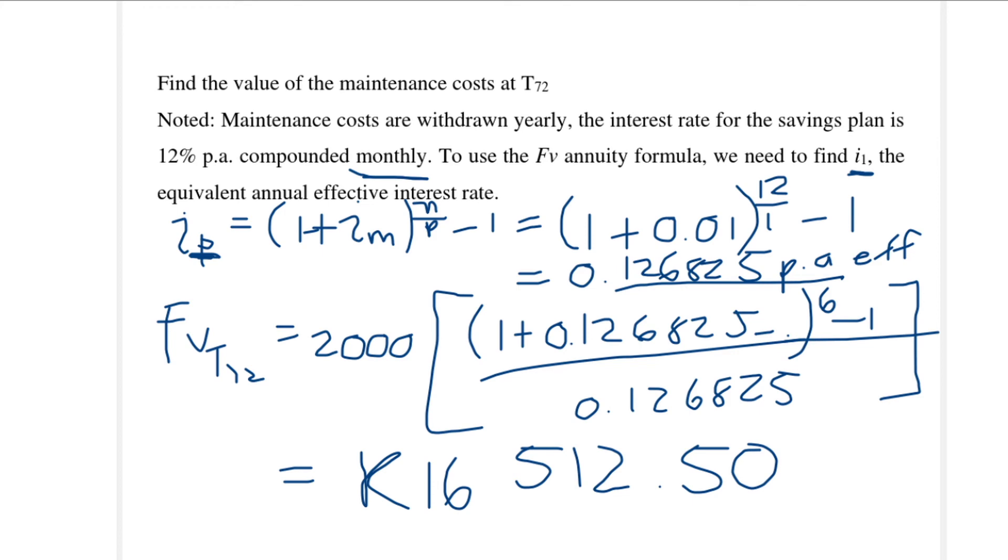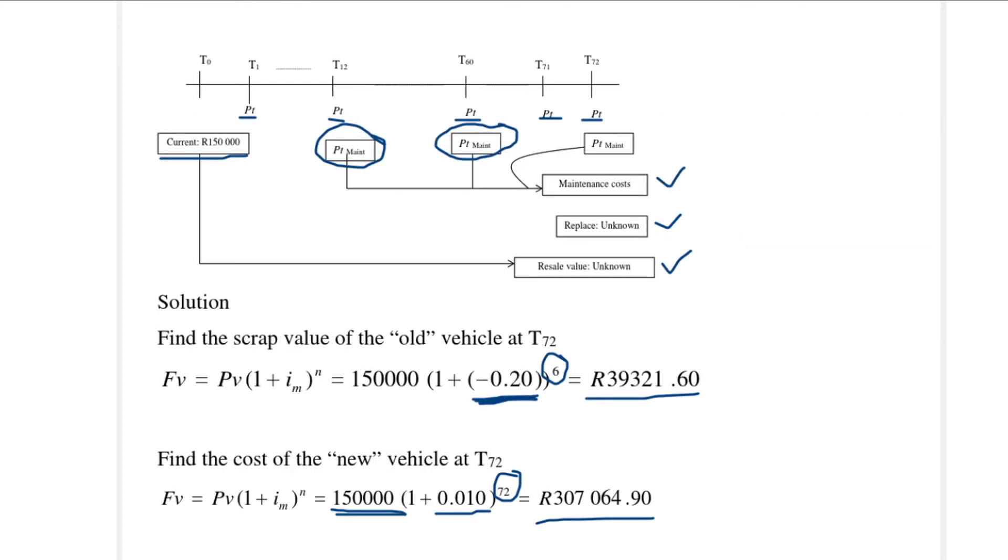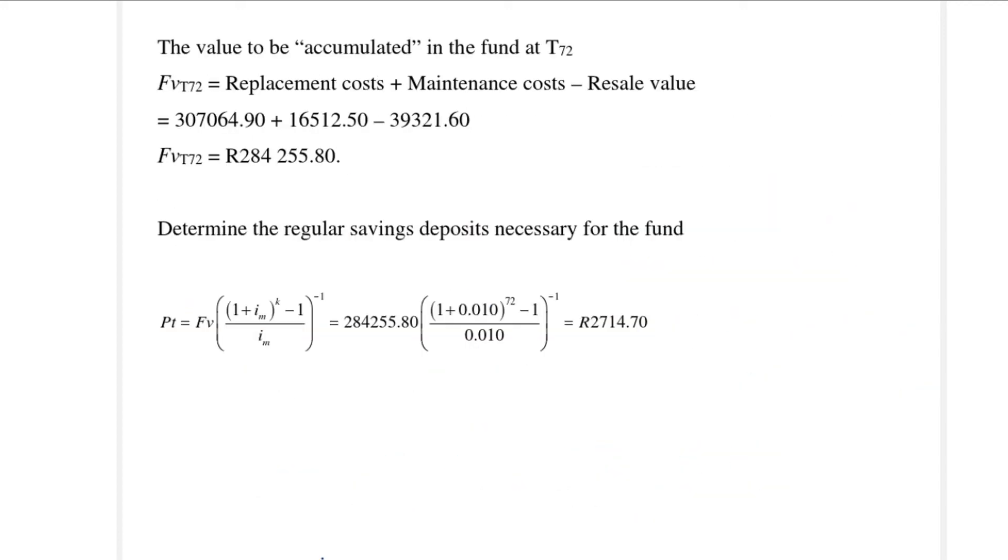Now we've calculated everything that we need. If we go back to our timeline, we've got the maintenance cost, we've got the replacement value, and we've got the resale value. So we will add the top two and then subtract the second-hand value to know what amount of money must accumulate into the fund over the six years. That is what we have on this slide: we have the replacement cost plus the maintenance cost, and we subtract from that the resale value. We see that the amount that needs to be accumulated into the fund is 284,255.80.